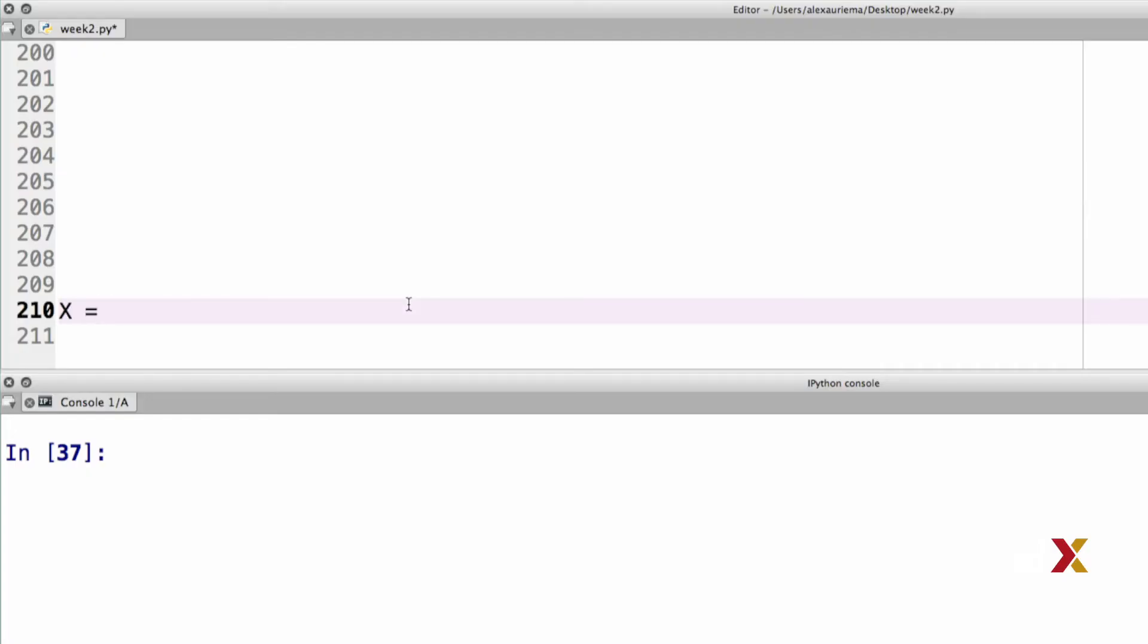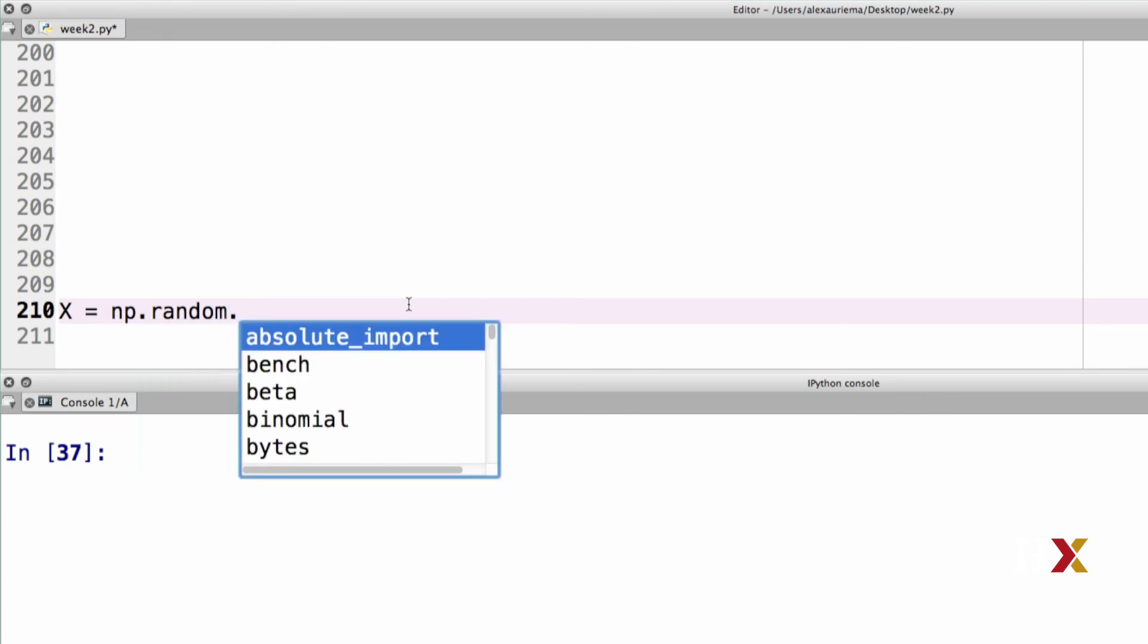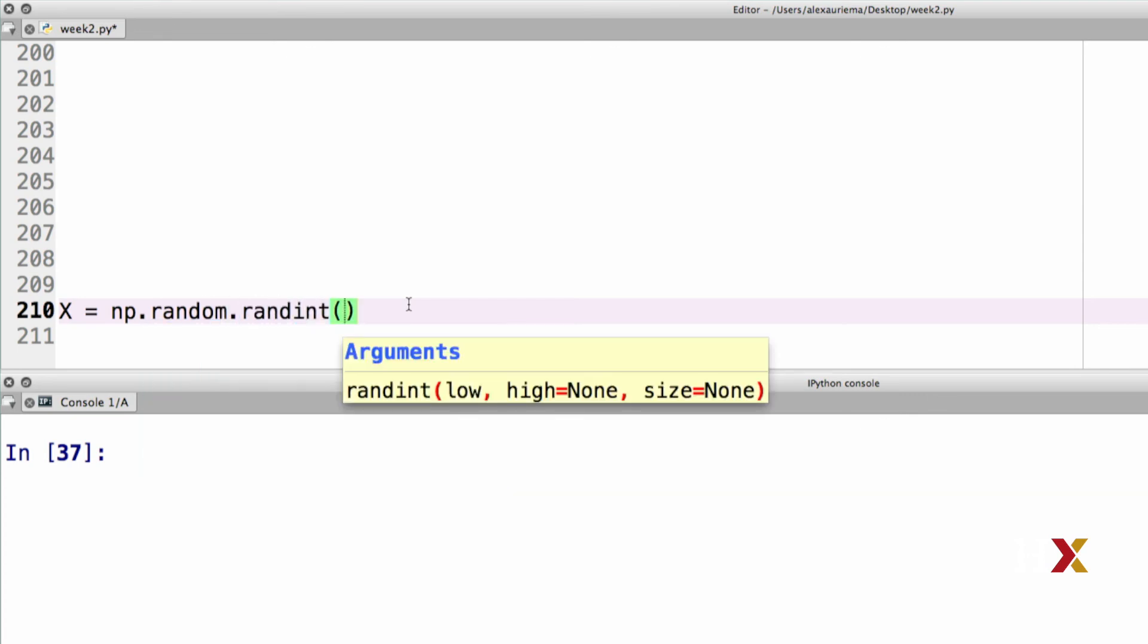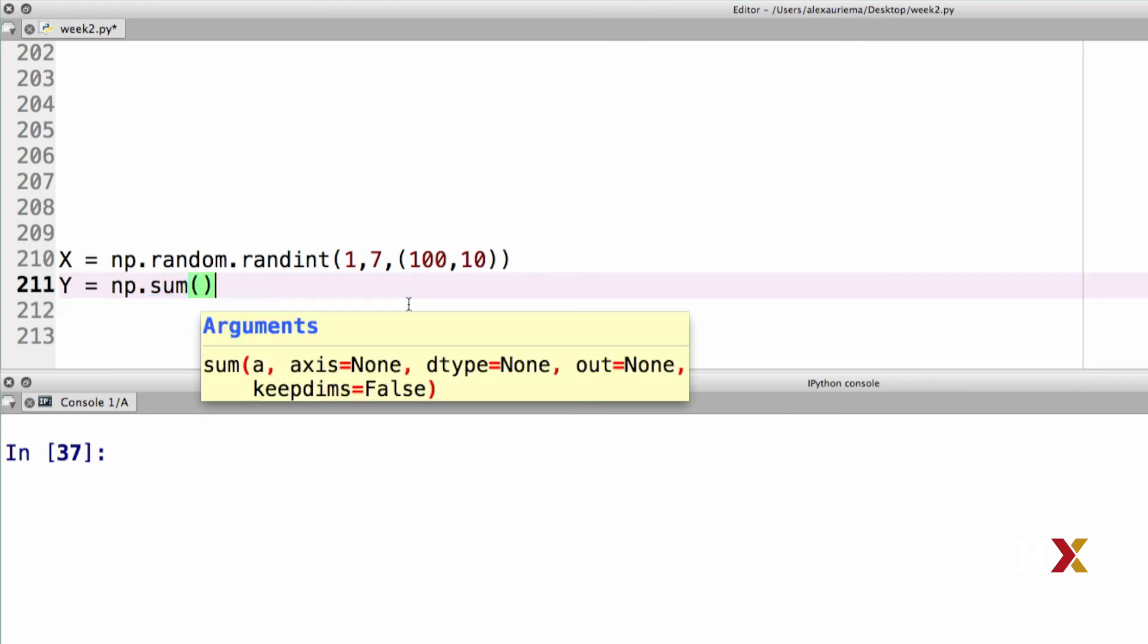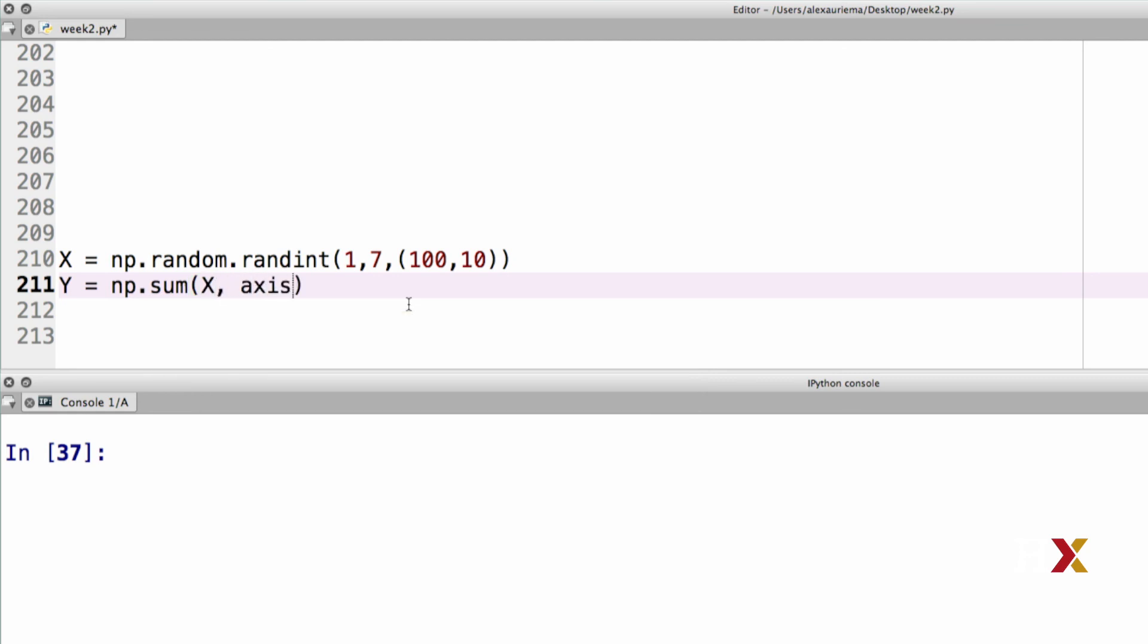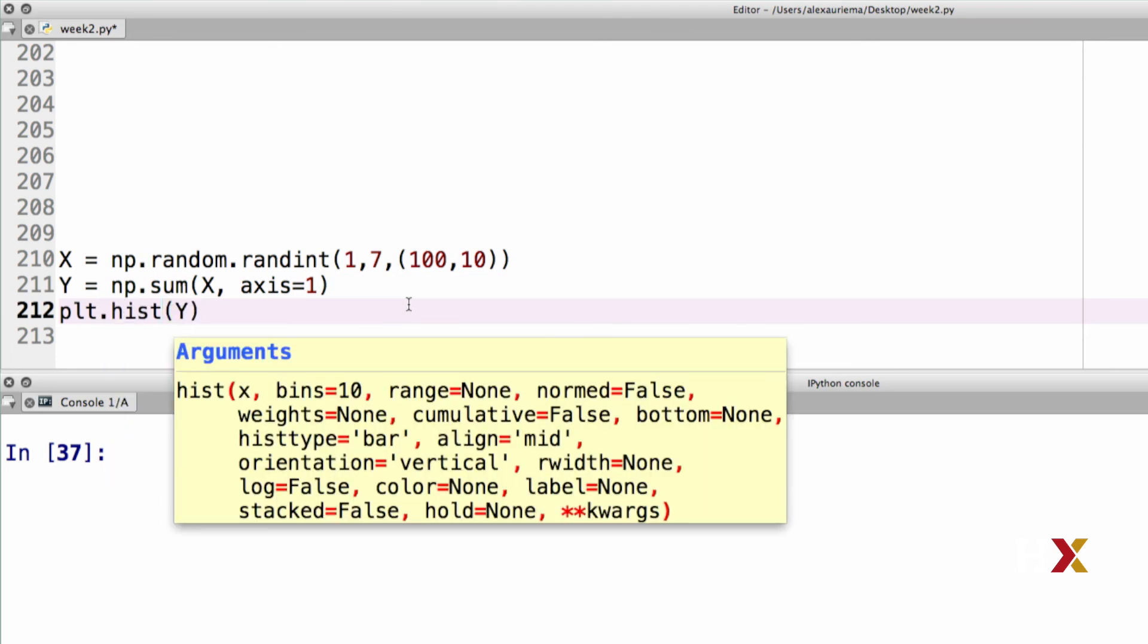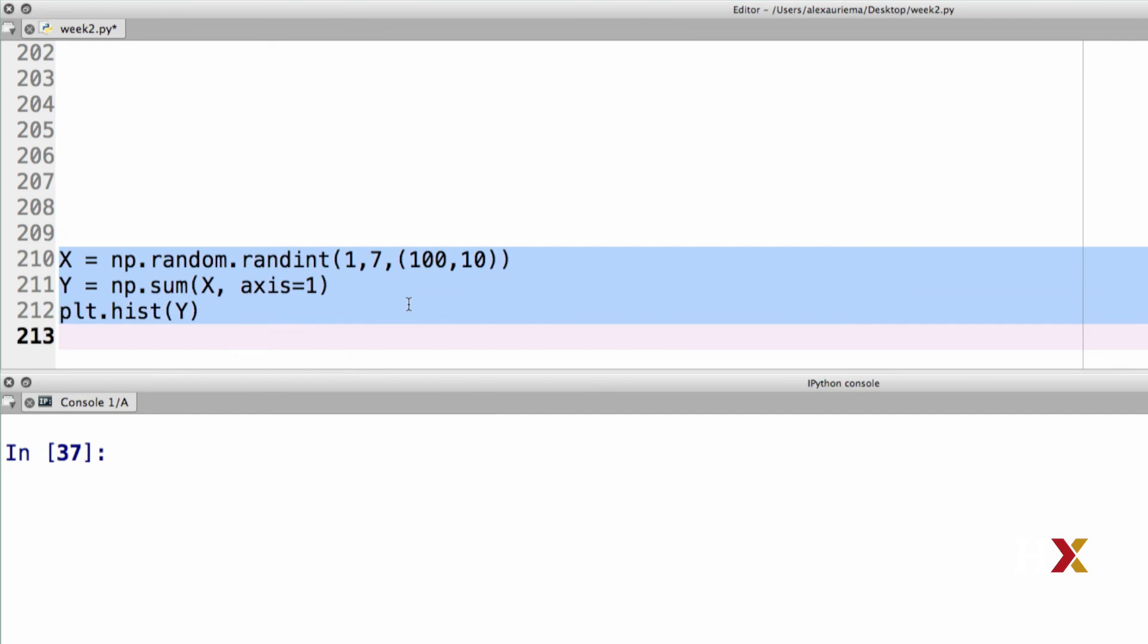Let's now put our code together. The first line is going to be, again, random.randint. And I will now insert the actual dimensions of the array, 100 rows and ten columns. My y variable is going to be formed as a sum, so I'm using np.sum of x. And here I specify axis equal to one, which is dimension one of the array. If we wanted to plot the histogram of this, we can just say plt.hist of y. Let's try running this code.